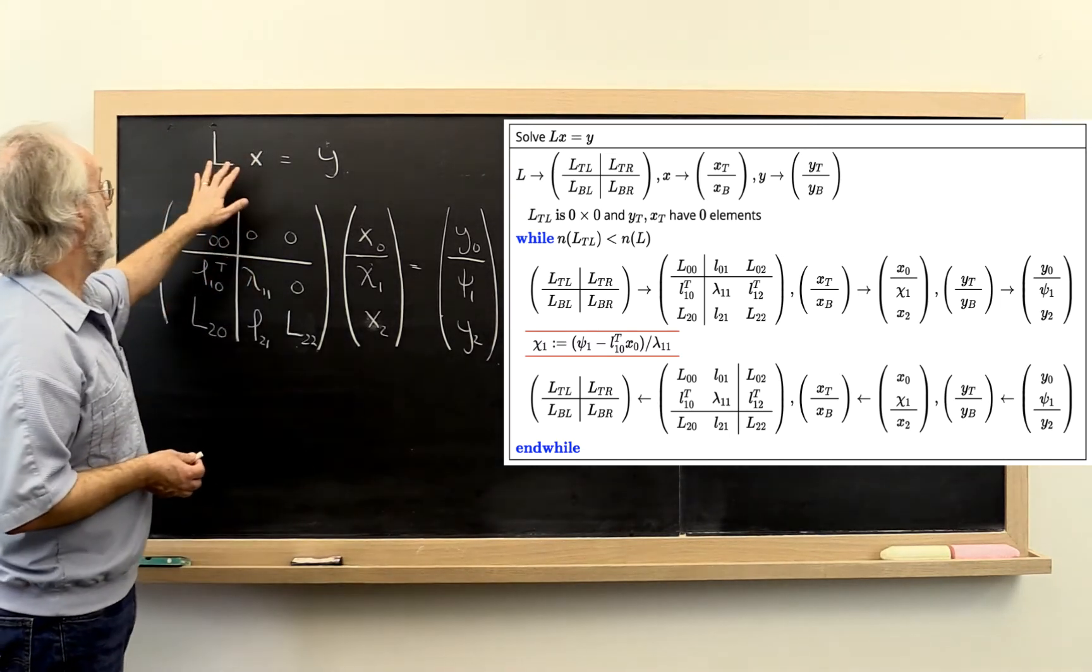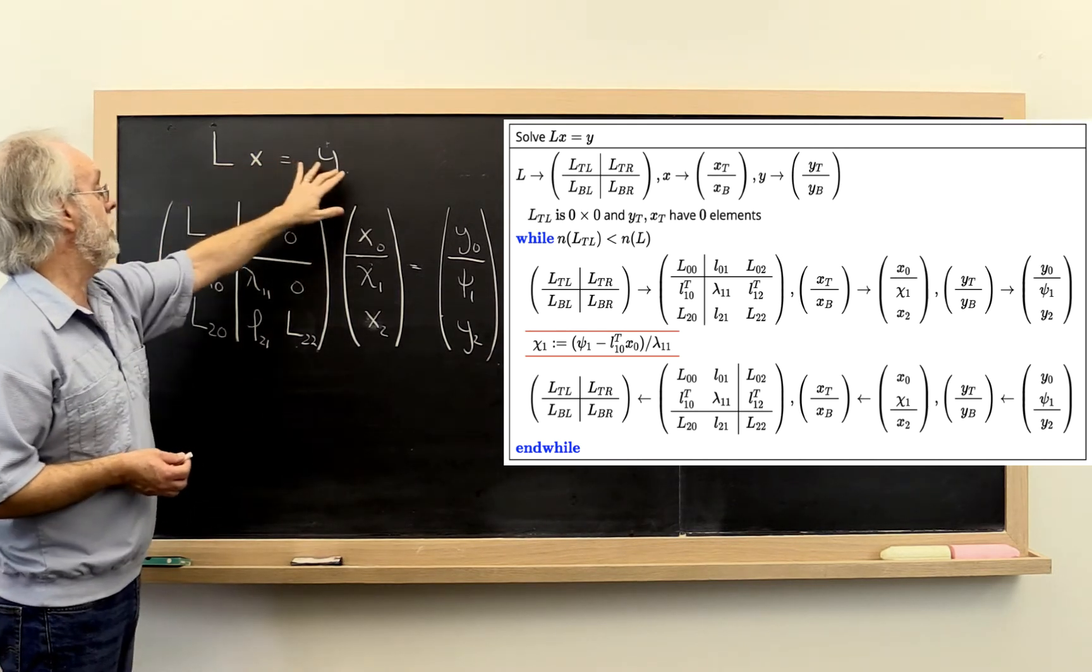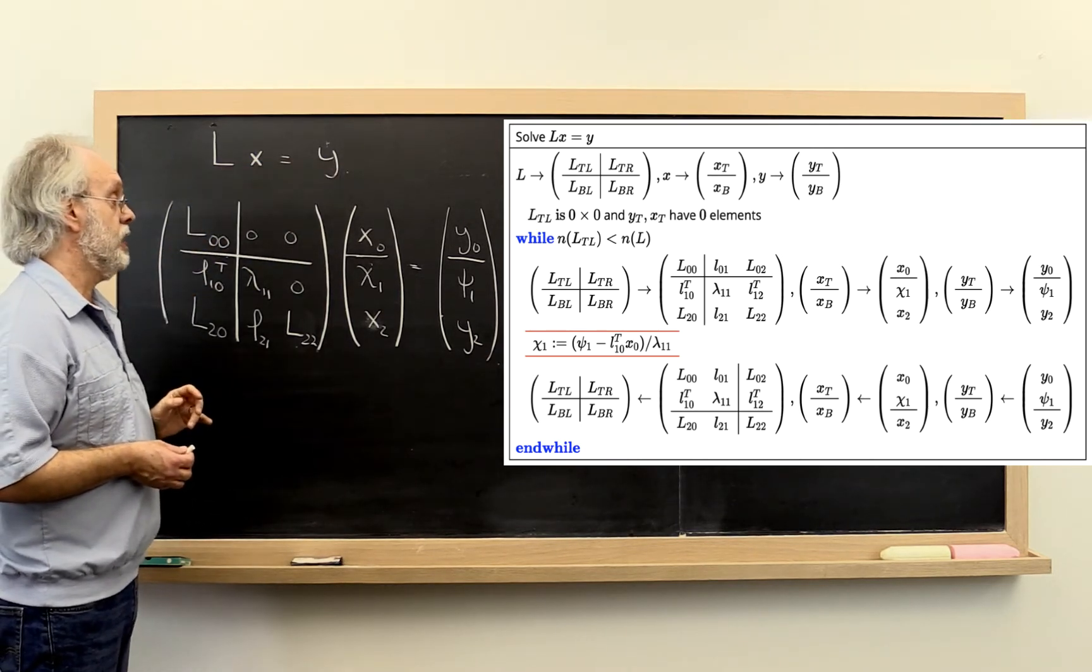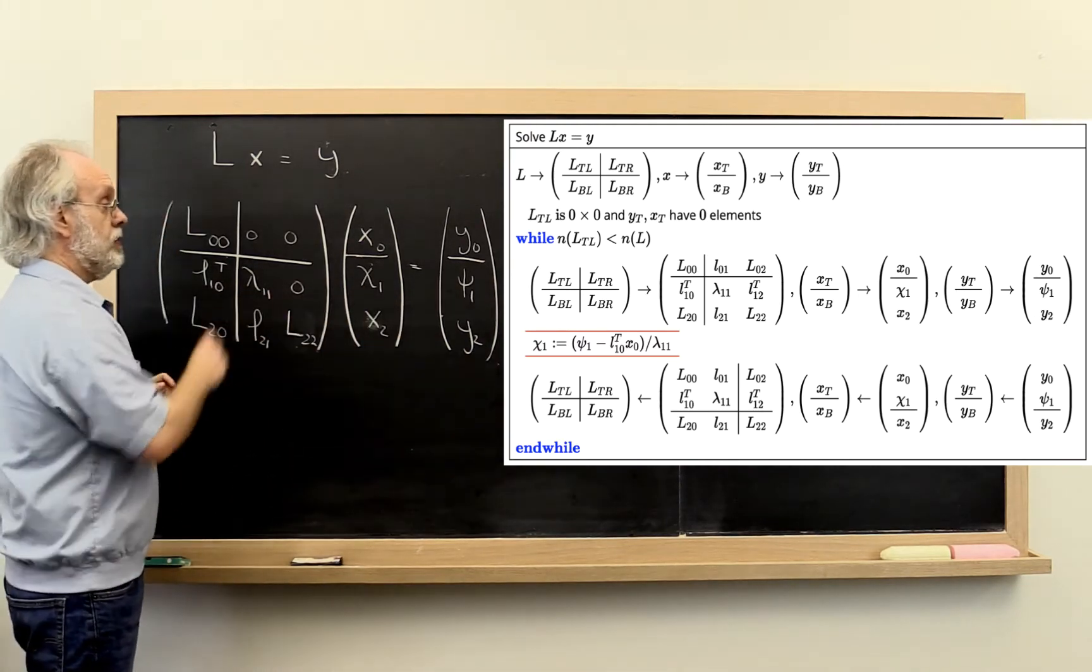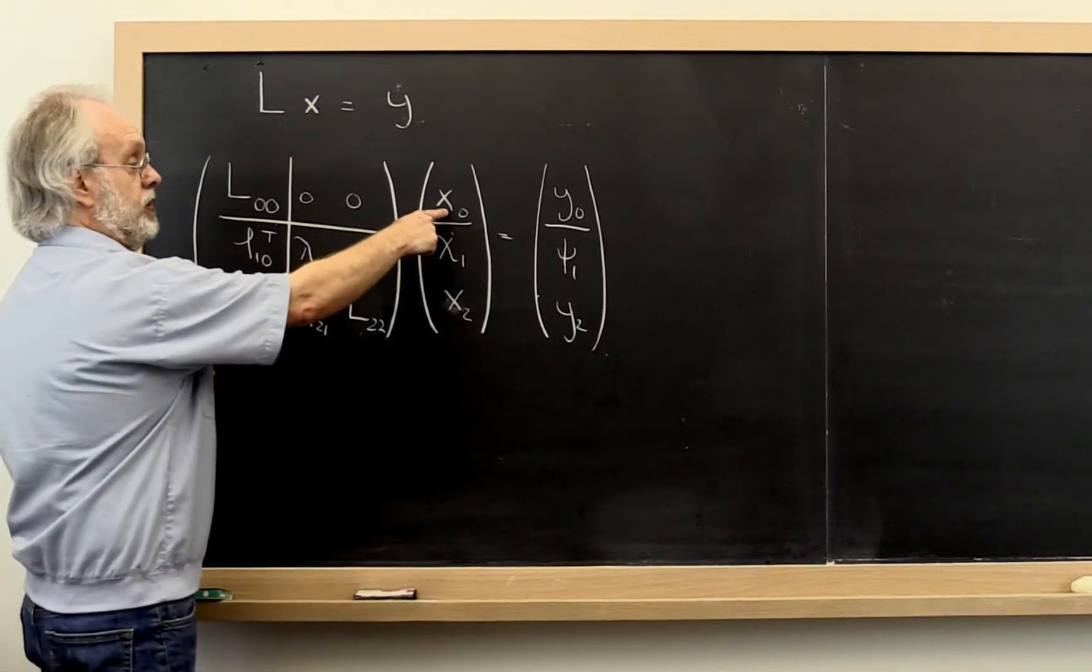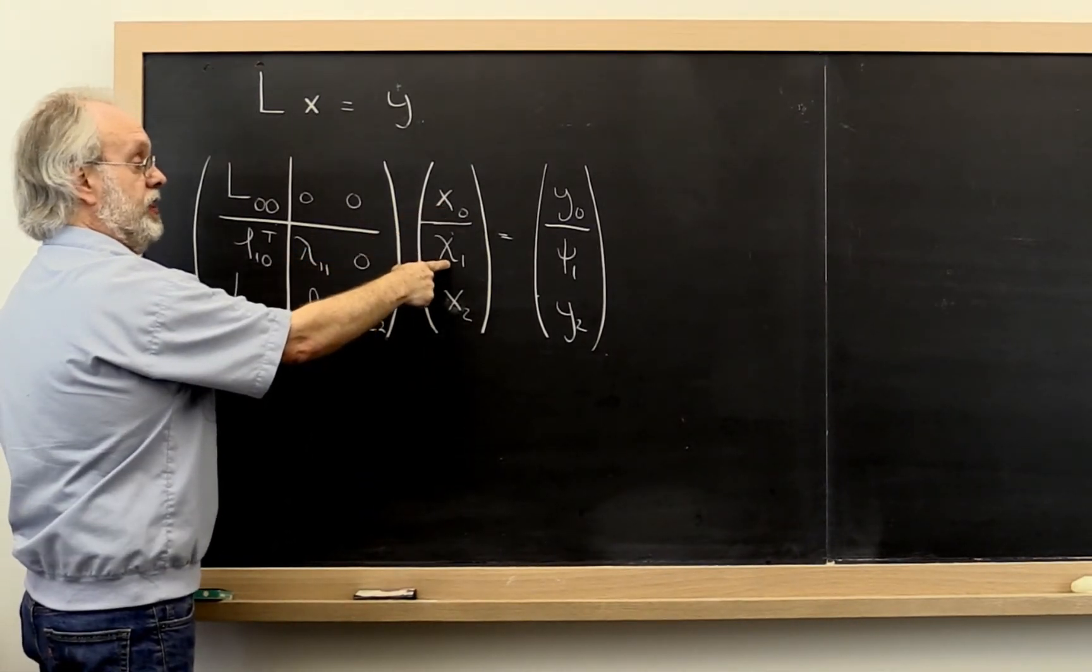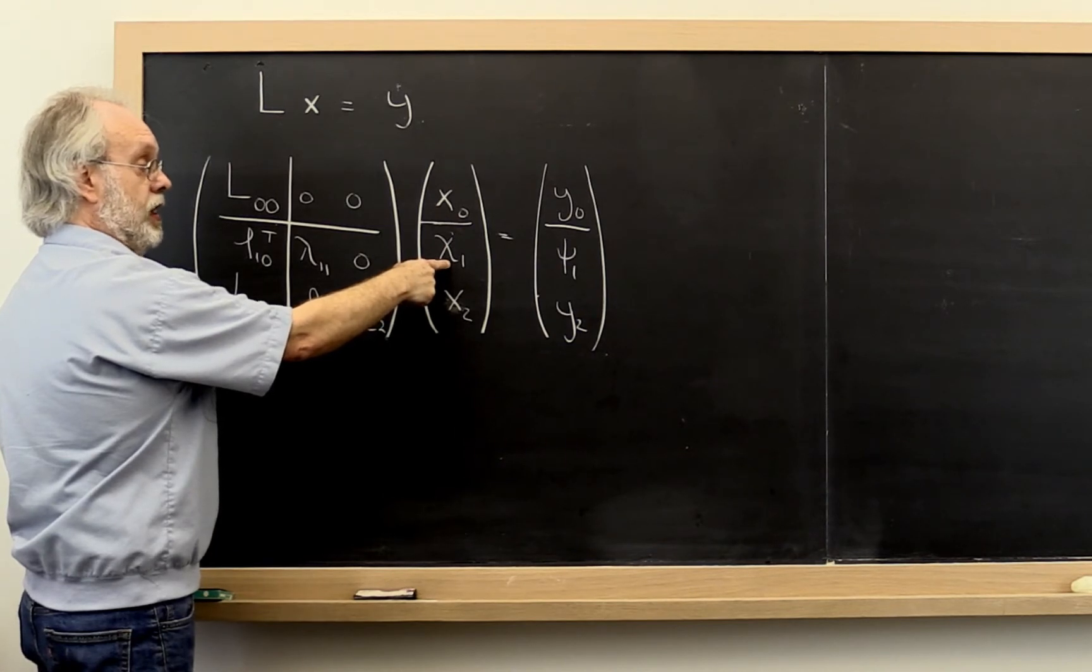So we want to solve a lower triangular matrix times x equals y where L and y are given. We want to compute x. And at some point in our algorithm we've gotten to this point right here where we have computed x0 already. And we want to compute the next element of x, chi1.